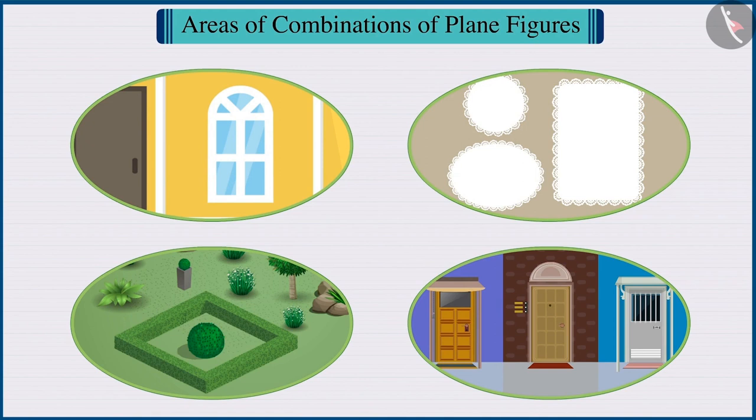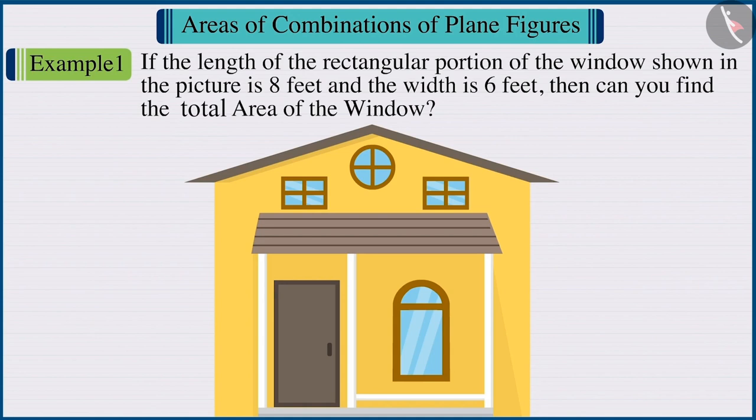Let's see some examples. If the length of the rectangular portion of the window shown in the picture is 8 feet and the width is 6 feet, can you find the total area of the window?